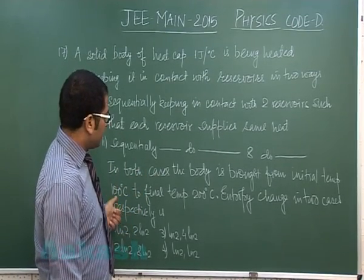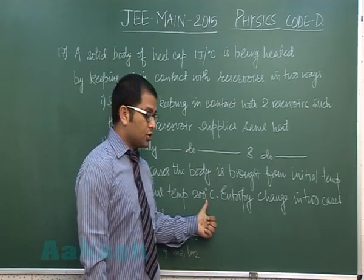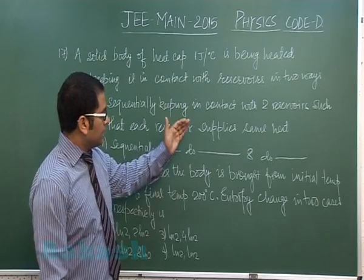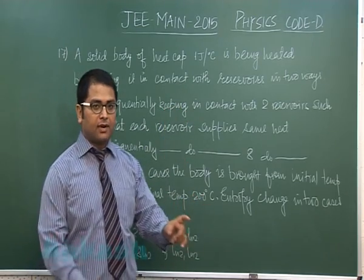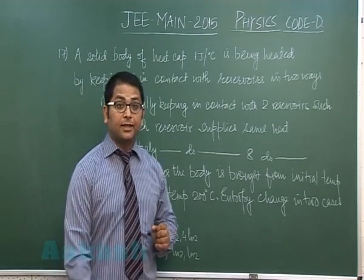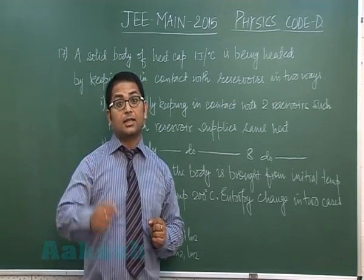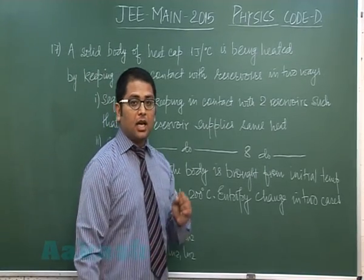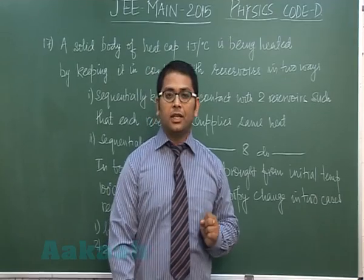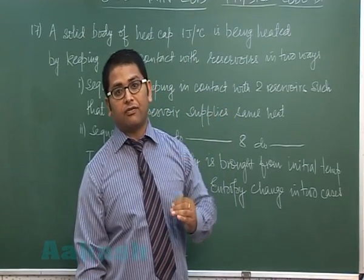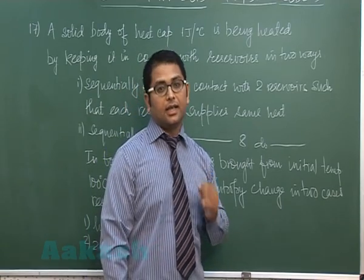In both cases, the body is brought from initial temperature 100 to final temperature 200. In case one, 100 to 200 is divided into two slots; in case two, it is divided into eight slots where each slot supplies the same heat. We need to find the entropy change in two cases. However, the change in entropy does not depend on the steps—it depends only on the initial and final values because it is a state function.